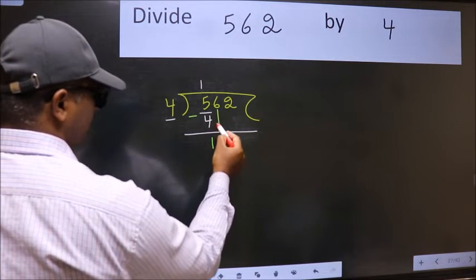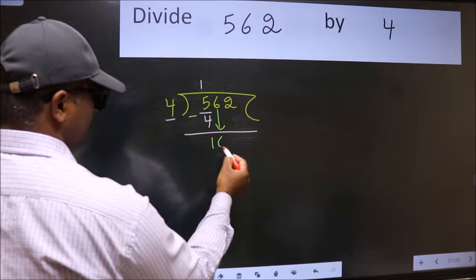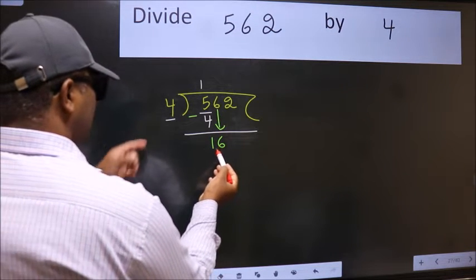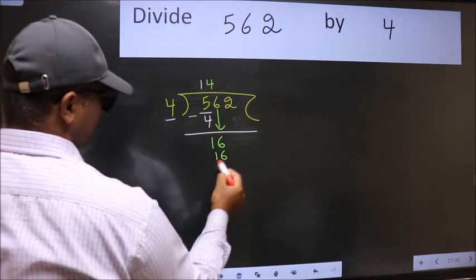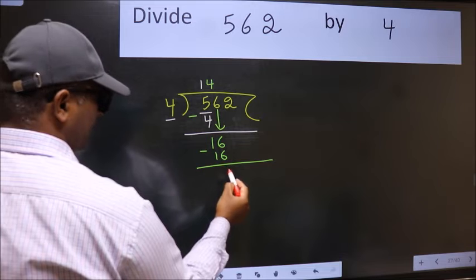After this bring down the beside number. So 6 down. So 16. When do we get 16 in 4 table? 4 fours 16. Now we subtract. We get 0.